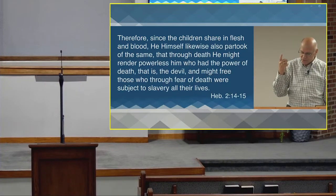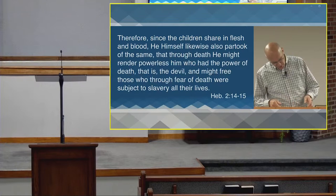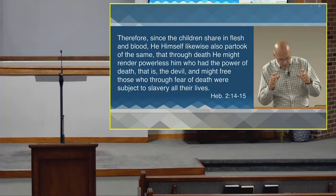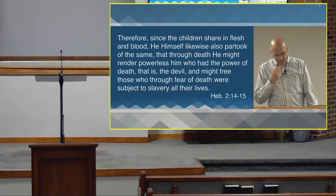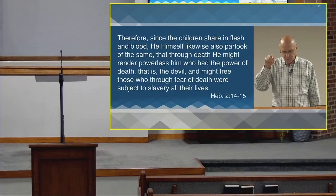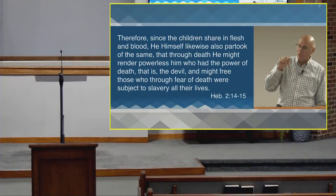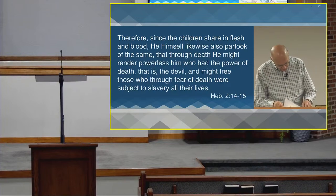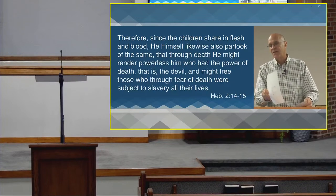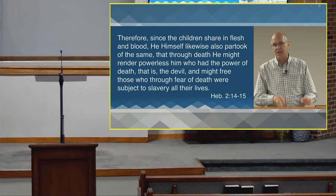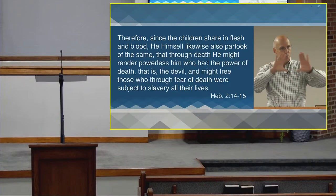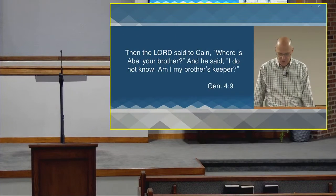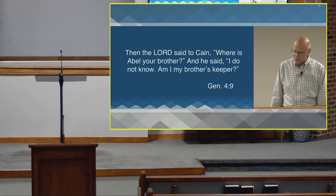Tonight we're going to continue in chapter four. We're going to look at the family level — the close-up shot — as we see the result of Cain's act and how God deals with Cain. Then we're going to move to a wider shot of society and its development. So let's go to Genesis chapter four, verse nine.